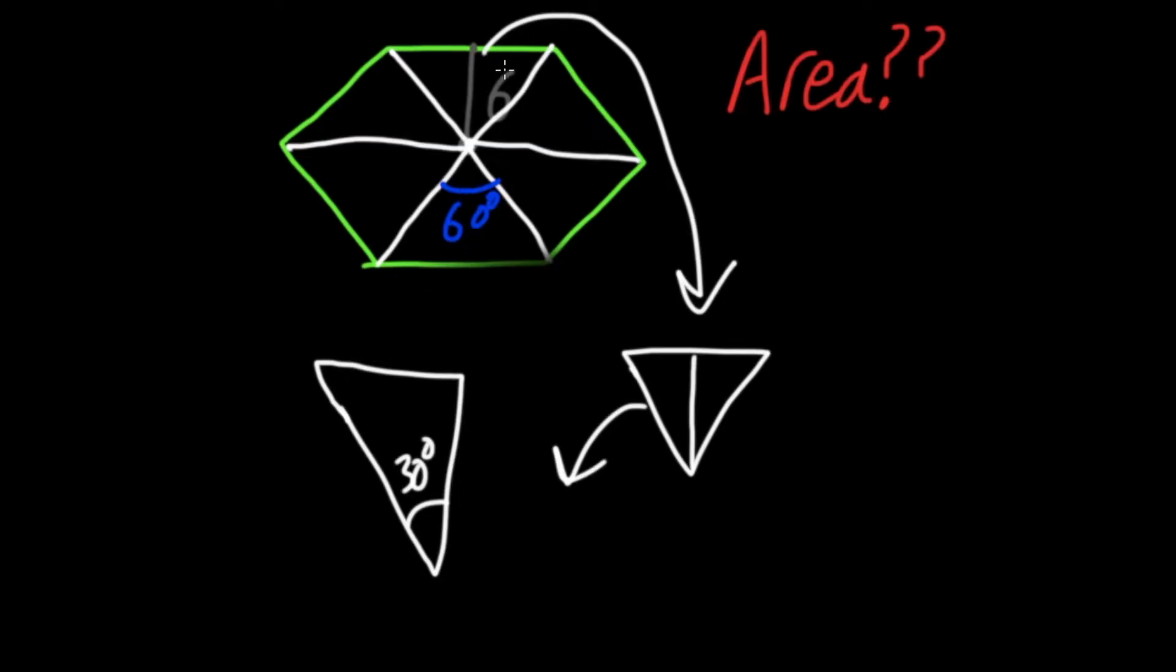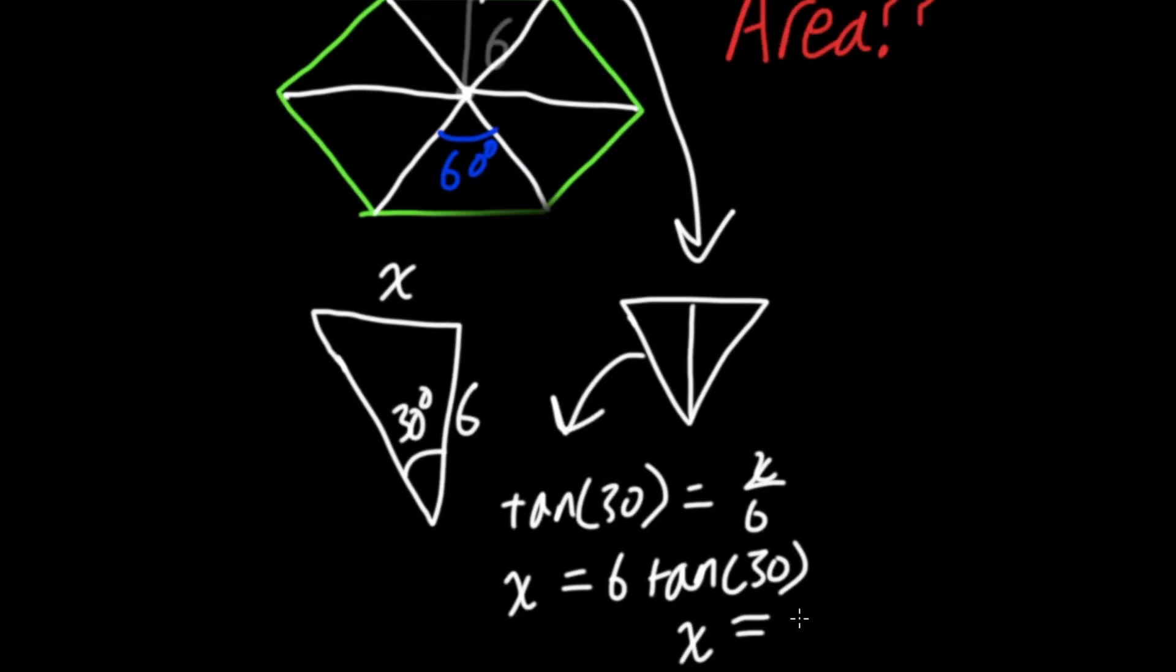And we have our apothem here, so this side length here is 6. That means we can find this side length here using trigonometry. So let's just call this side length x. Because this is opposite over adjacent, we have tan of 30 is equal to x over 6. If we multiply both sides by 6, we get x equals 6 tan 30. And if you type that into your calculator, you'll get x is equal to 3.5 rounded.